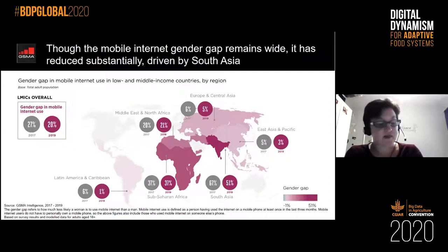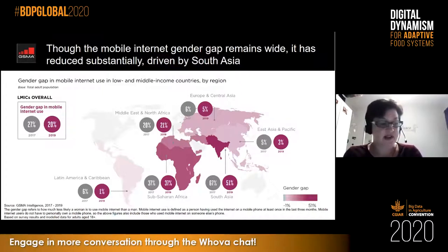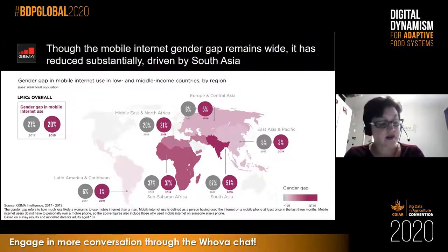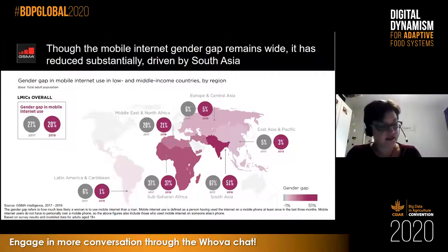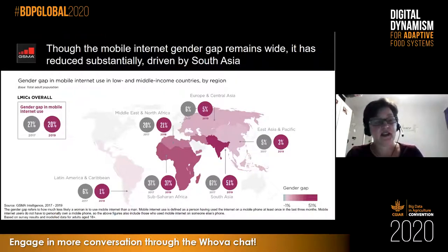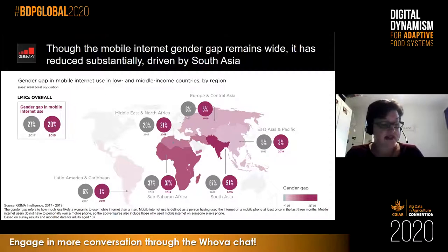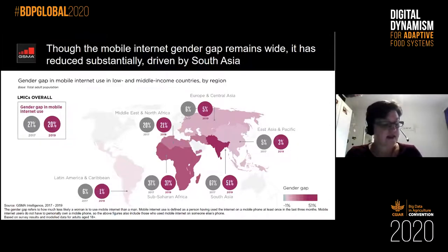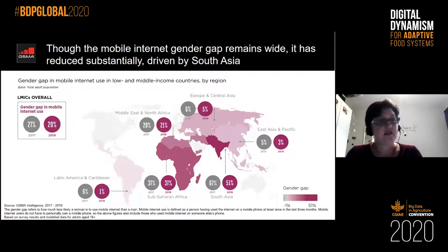There's a persistent gender gap. Fifty percent of women in low and middle income countries are using mobile internet — an important milestone — but there's still a substantial gender gap. Women are 20 percent less likely to use mobile internet than men in low and middle income countries, but it's been declining — down from 27 percent in 2017. The majority of the closure has been driven by South Asia, which is also the region with the biggest gender gap, down from 67 percent in 2017 to 51 percent in 2019, driven partly by data becoming more affordable.